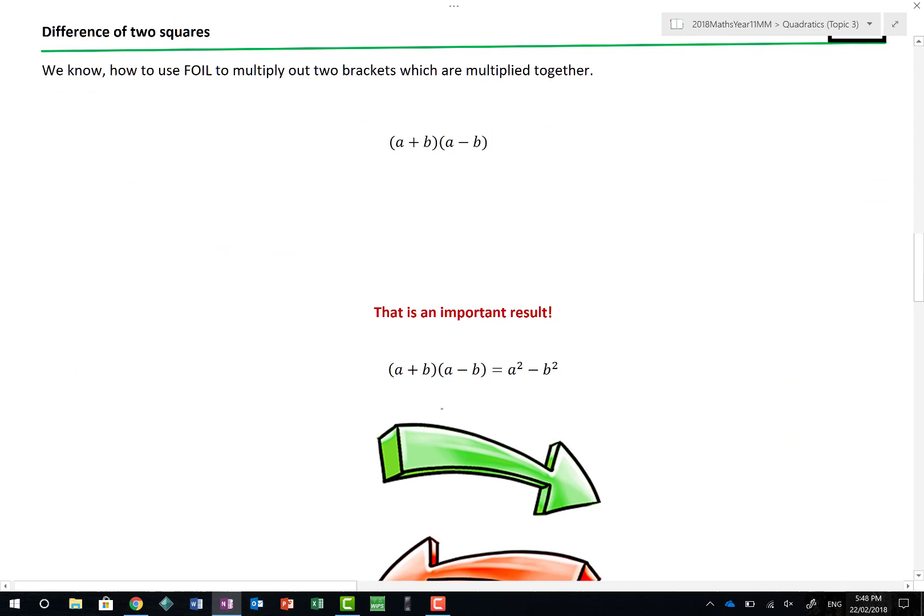The difference of two squares is really, really important. We know how to use FOIL. If I was to multiply this out using first, first, second, I would end up with a squared plus ab minus ab minus b squared. One of you is going to scream at me and go, no, no, no, it's actually minus ba. What is 2 times 3? Hopefully 6. What is 3 times 2? Also 6. So multiplication can be done in reverse. ab and ba are, in fact, the same thing, which allows these two to cancel out completely. We end up with a squared minus b squared.